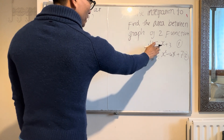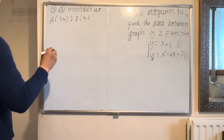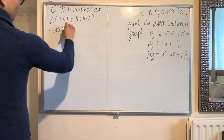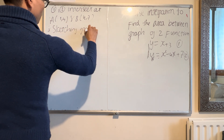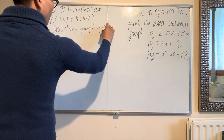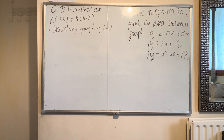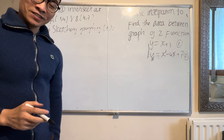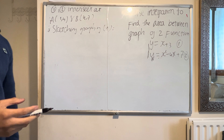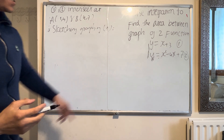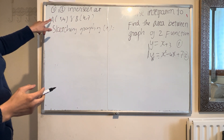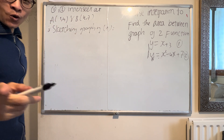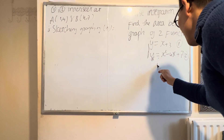Now you have to sketch the graph of function one. Function one is a straight line, so it is very simple to sketch — it passes through both points A and B.